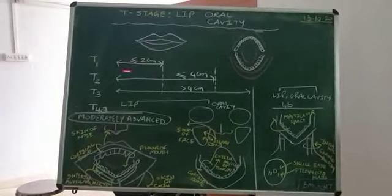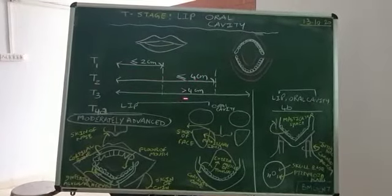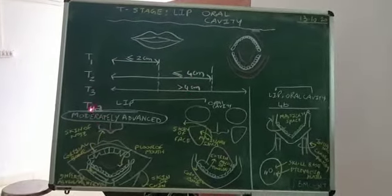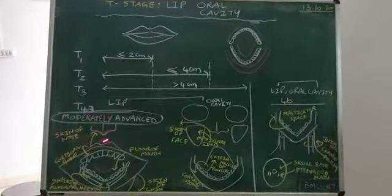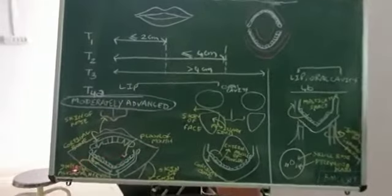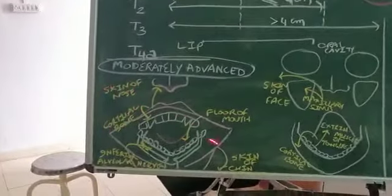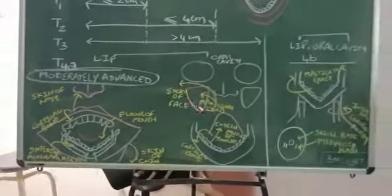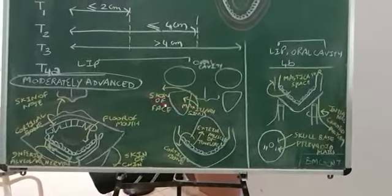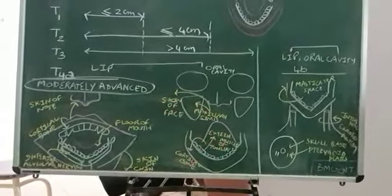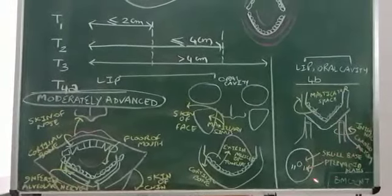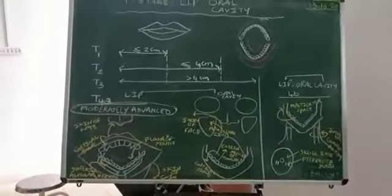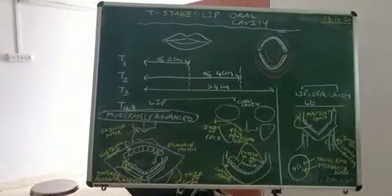That is less than 2, T1. Less than 4, T2. More than 4, T3. For moderately advanced, floor of the mouth, inferior alveolar, cortical bone, skin of the nose and chin for lip. For oral cavity, maxillary sinus, skin of the face, extrinsic muscles of the tongue, cortical bone. For masticator space, internal carotid artery, skull base and pterygoid plates. Keep on watching this video until you find out. Thank you for watching ENT students.